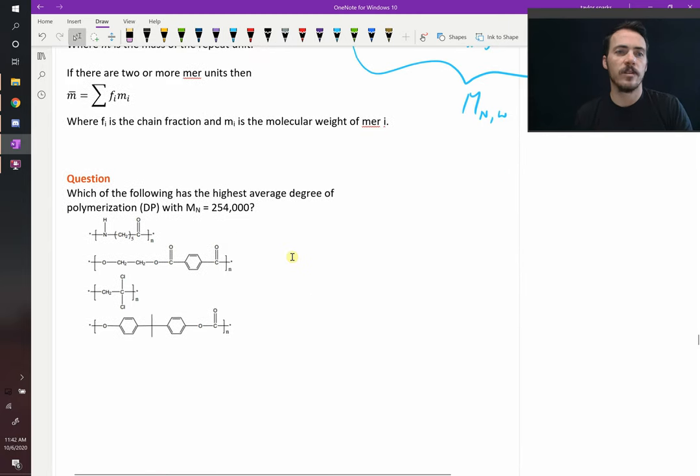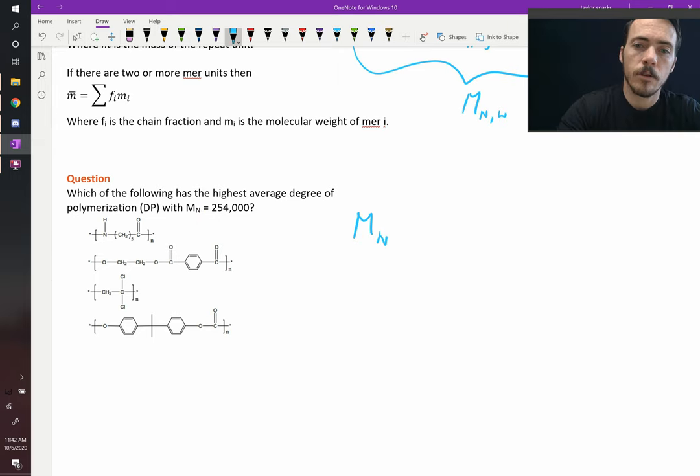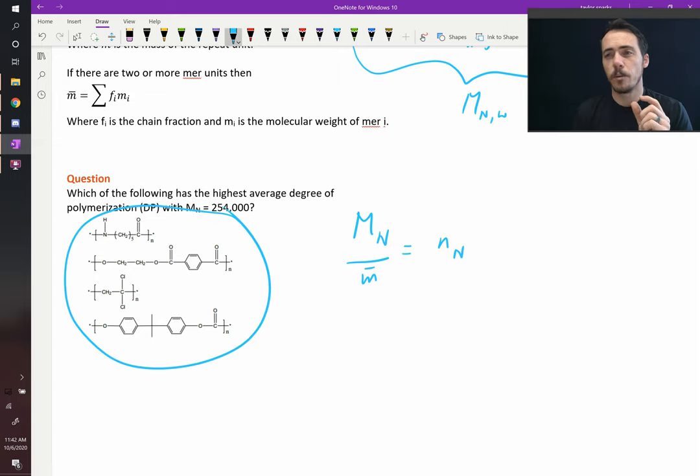Let's do an example of this. It says, the question says the following. It says, which of the following has the highest average degree of polymerization with M sub n equal to 254,000 grams per mole? So the overall chain length in all these scenarios is 254,000 grams per mole. So if we divide that by the mer weight in each of these instances, then we will end up with the degree of polymerization number averaged. So let's go ahead and do that. The numerator is going to be the same in each of these. It's just 254,000 grams per mole.